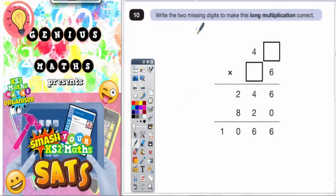Question 10. Write the two missing digits to make this long multiplication correct.